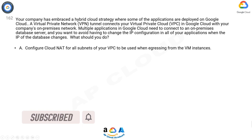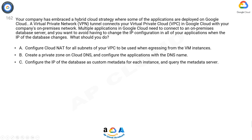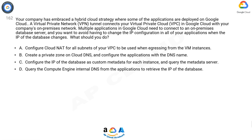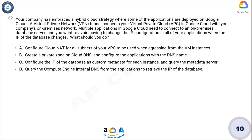What should you do? A) Configure Cloud NAT for all subnets of your VPC to be used when egressing from the VM instances. B) Create a private zone on Cloud DNS and configure the applications with the DNS name. C) Configure the IP of the database as custom metadata for each instance and query the metadata server. D) Query the Compute Engine internal DNS from the applications to retrieve the IP of the database. Now take 10 seconds to think about the answer.